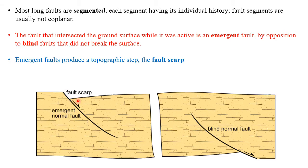Most long faults are generally segmented, each segment having its own individual history. A fault that intersects the ground surface while active is known as an emergent fault, producing a fault scarp — the exposed fault plane — which is generally present in neotectonically active faults. Faults whose surface does not reach the ground are known as blind faults. In older faults, fault scarps have been eroded, so their presence indicates neotectonic activity.